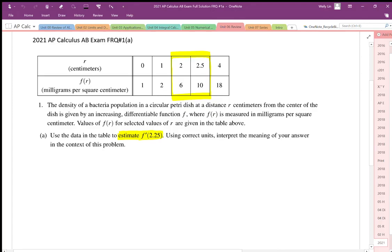First of all, anytime we're asked to estimate a derivative and we're given the function in a table, we're just going to calculate the secant line or the average slope between 2 and 2.5. 2.25 represents the mid interval value and we're just going to calculate the slope between those two points.